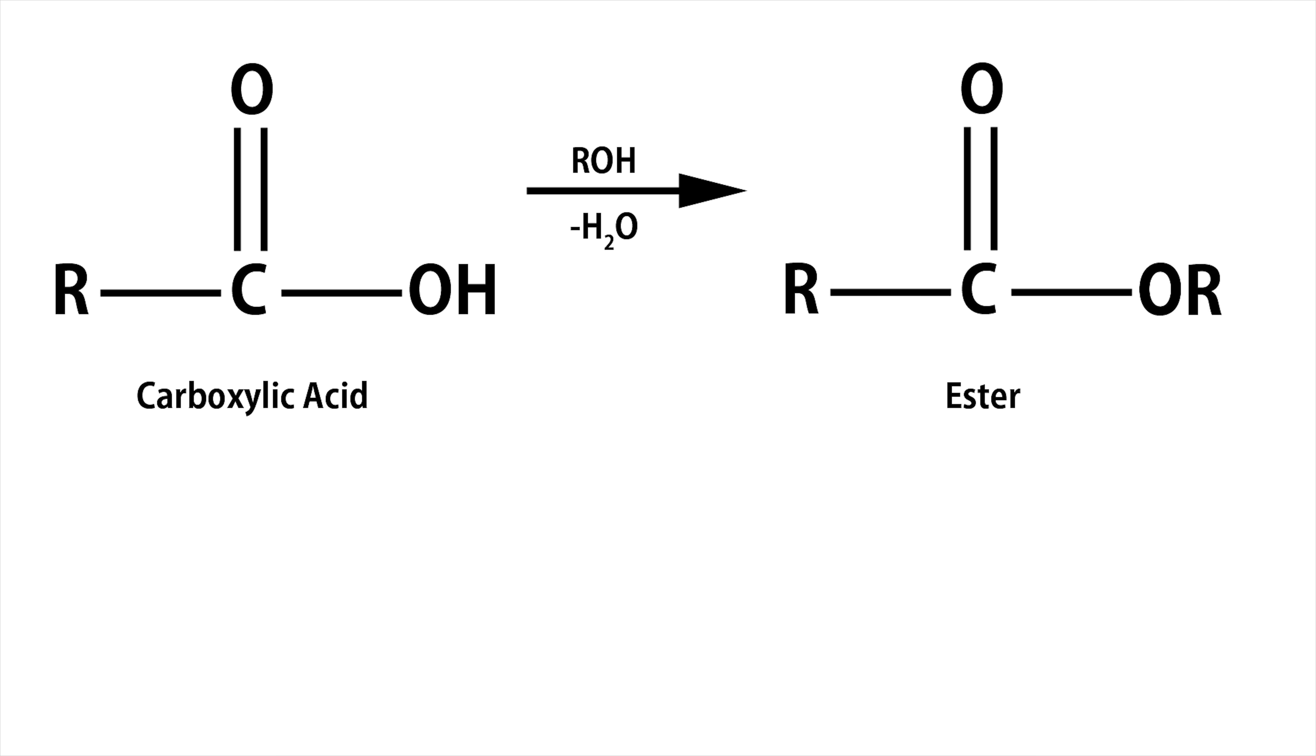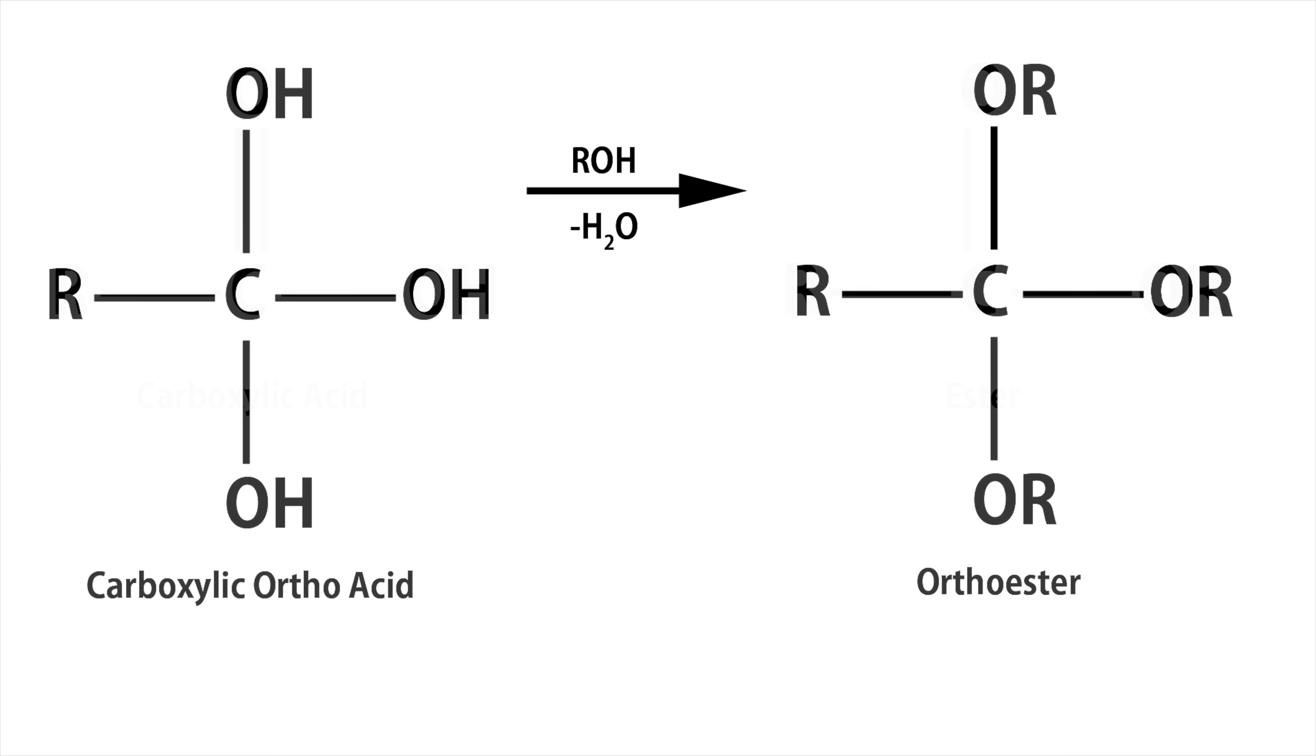If we condense the hydroxyl group of a normal carboxylic acid with an alcohol we get an ester. This is well known chemistry and done every day. We ourselves did this in a previous video making ethyl propionate. If we did this to our hypothetical orthoacid on every hydroxyl group we would get an orthoester.